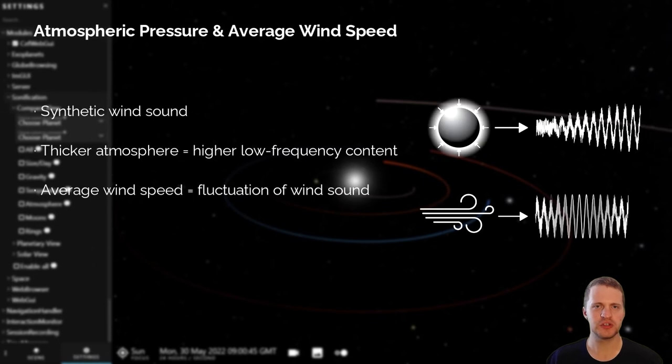Lastly, atmospheric pressure and average wind speed were conveyed with a synthesized wind sound, where the thickness of the atmosphere was conveyed through the amount of low-frequency content of the wind, and the average wind speed was conveyed through the amount of fluctuation of the wind sound.